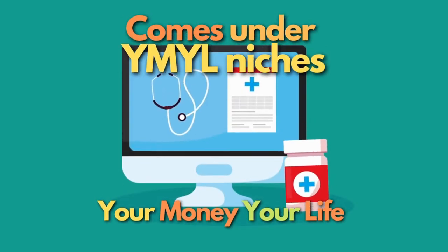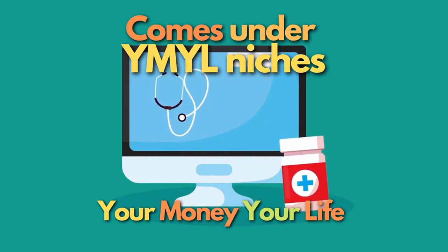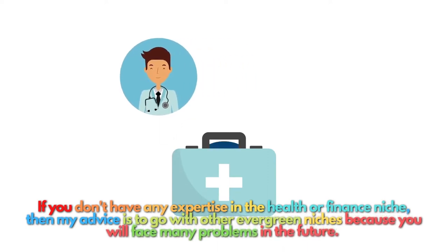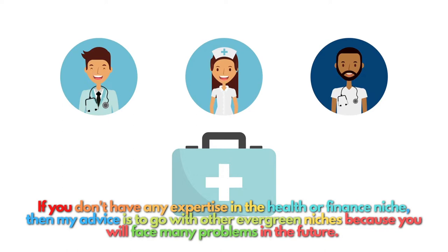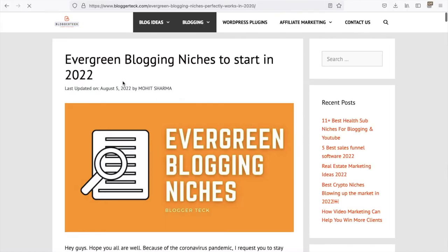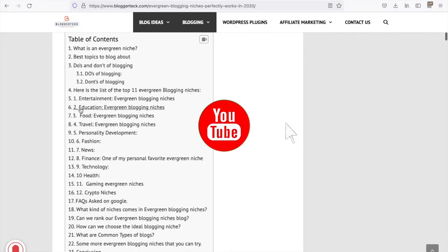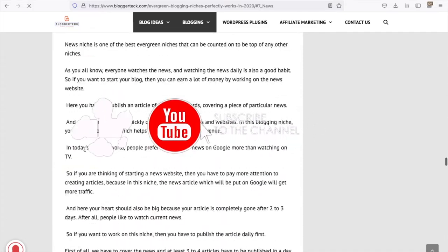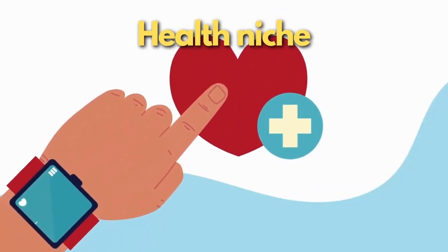Before we go into our list of fitness sub-niches, you should know that the health niche falls within the 'Your Money or Your Life' category, which relates to topics and niches that can directly impact a person's health or finances. If you don't have any expertise in the health or finance niche, then my advice is to go with other evergreen niches, because you will face many problems in the future. Now let's understand what 'Your Money or Your Life' niches are.